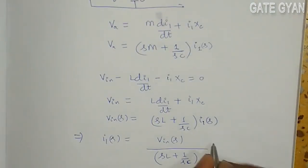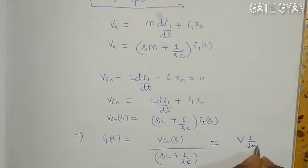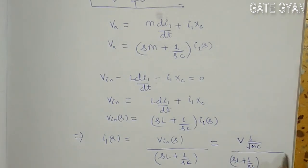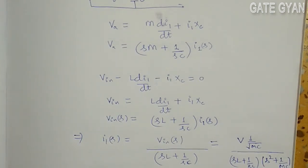As we have given Vin as V·sin(t/√(MC)), this is our Vin. So the Laplace of this Vin is going to be: the angular frequency ω₀ equals 1/√(LC), and the Laplace transform gives us V·ω₀ upon (S² + 1/MC), that is, S² plus ω².